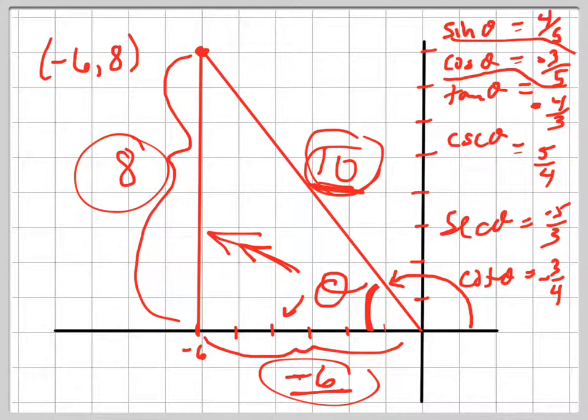And those are your six basic trig functions for the terminal side, negative 6, 8.